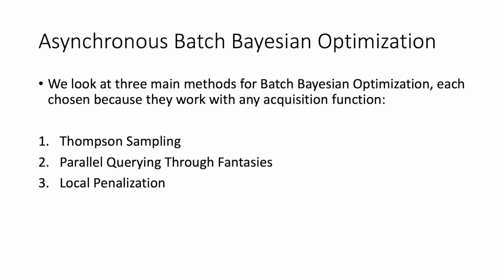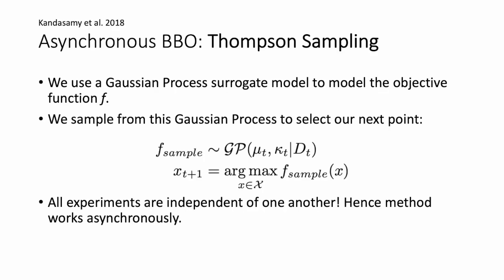We will now look at asynchronous batch-based optimization methods, in particular Thompson sampling, fantasizing, and local penalization. Thompson sampling uses the Gaussian process's own randomness to create batch diversity. We sample a function from the Gaussian process — since it is a probabilistic model over functions — and then optimize that sample to select the next point. All experiments are independent of one another, so the method works asynchronously and is acquisition-function-free.